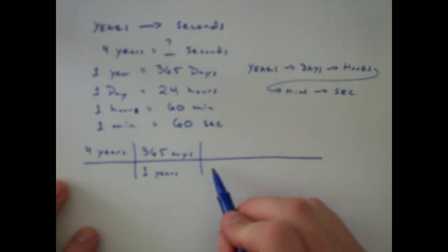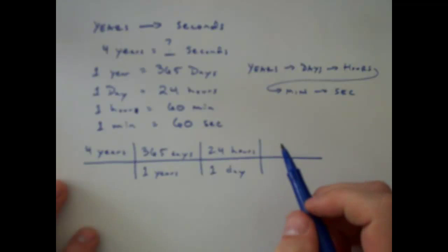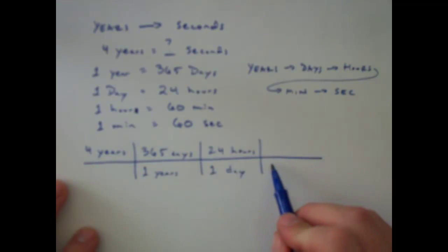Then I'm going to go days to hours. So I can say one day equals 24 hours. Then I can do one hour equals 60 minutes.